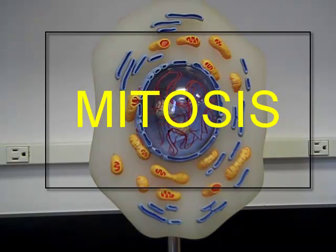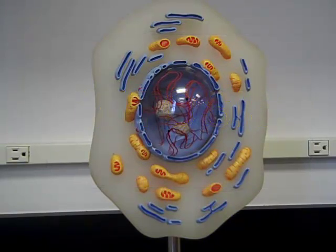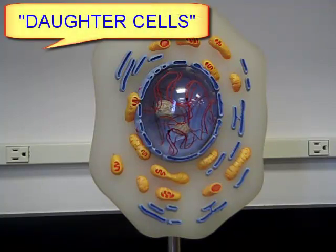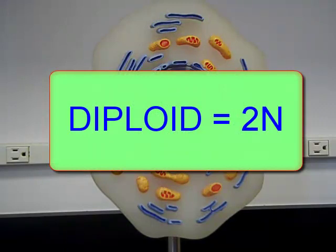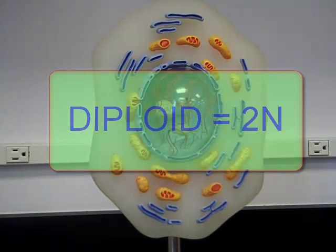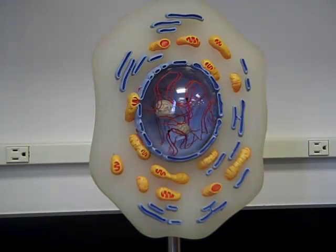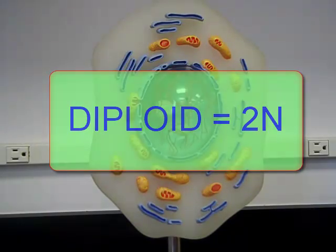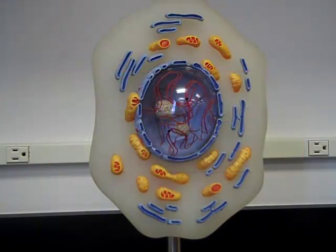Mitosis is a process where cells are trying to replicate or copy themselves. The original parent cell will ultimately become two daughter cells. The original cell is diploid in terms of genetic material — that's 2N chromosome number, full complement. The daughter cells will have the same identical amount of DNA. They will also be 2N diploid, full complement of DNA.